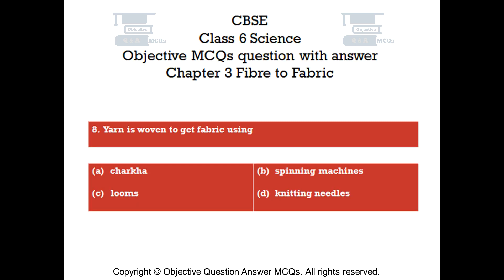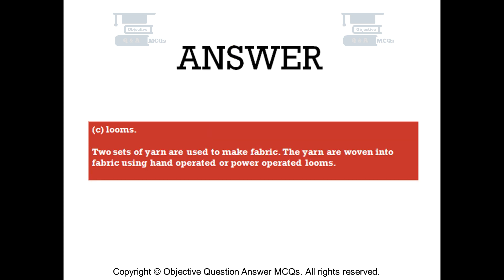Question number 8. Yarn is woven to get fabric using — Option A: charka. Option B: spinning machines. Option C: looms. Option D: knitting needles. The right answer is option C — looms. Two sets of yarn are used to make fabric. The yarns are woven into fabric using hand-operated or power-operated looms.